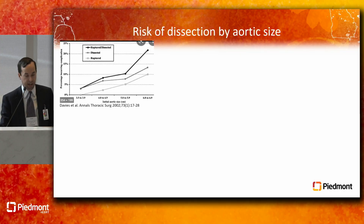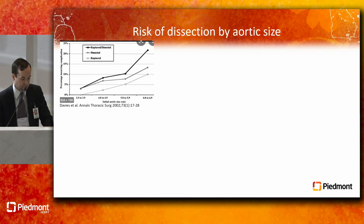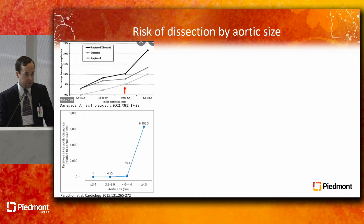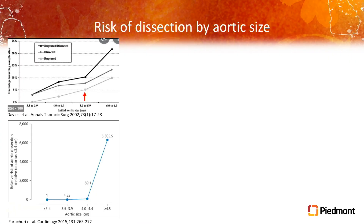The Yale group — John Elefteriades and his group — wrote one of the first papers addressing this question, and they found an inflection point for the risk of dissection or rupture around 55 millimeters. That was the basis for the old class one standalone indication. There's some more recent evidence suggesting that aortas of 45 millimeters or greater dissected at a much higher rate relative to normal aortas of 34 millimeters or less.